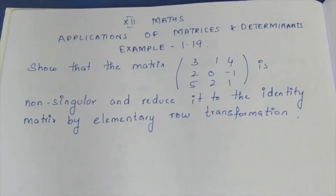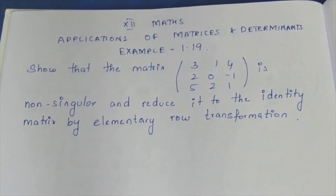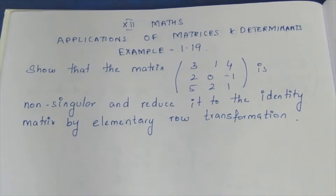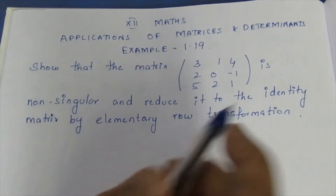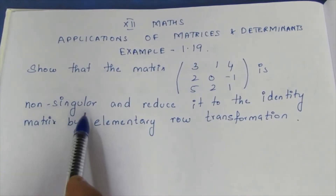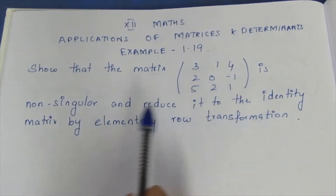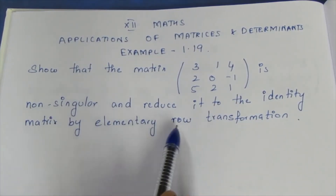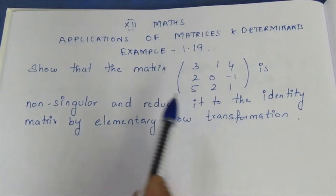Hello viewers, I am Aitli. In 12th Maths, applications of matrices and determinants, Example 1.19. The question is: show that the matrix is non-singular and reduce it to the identity matrix by elementary row transformation.